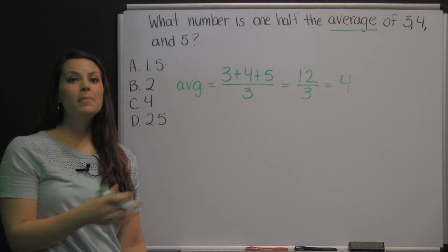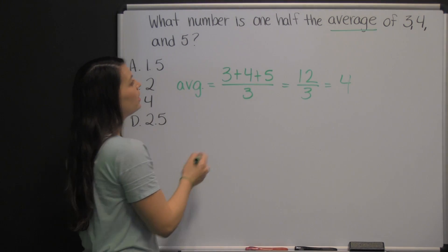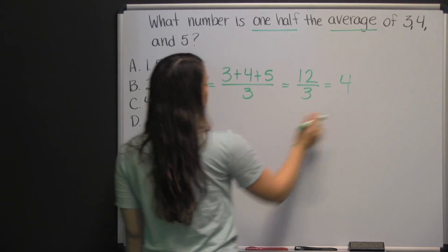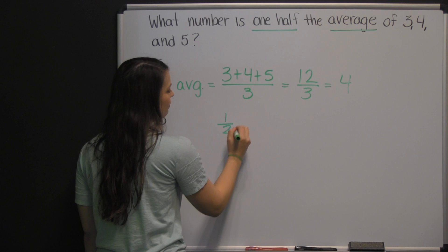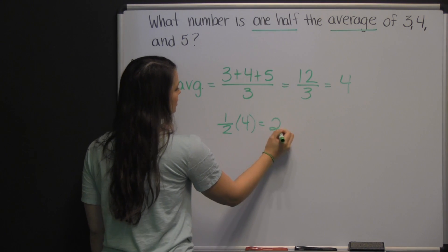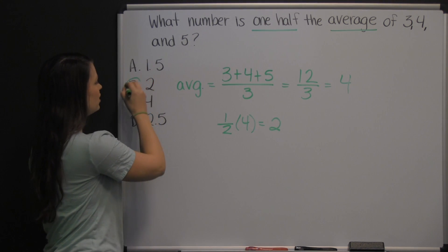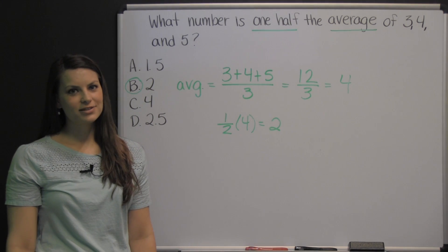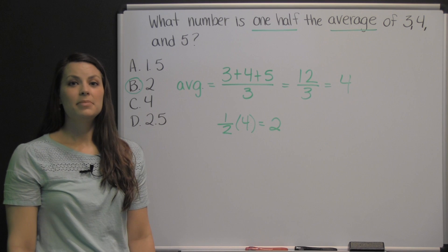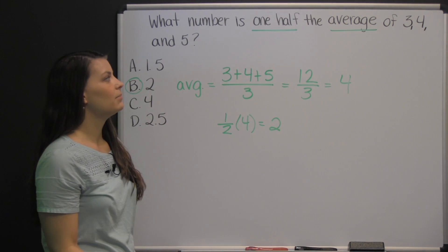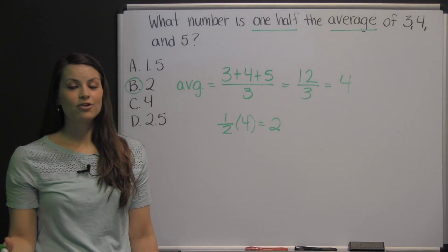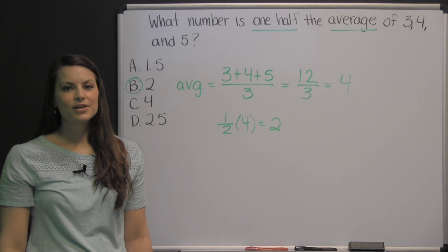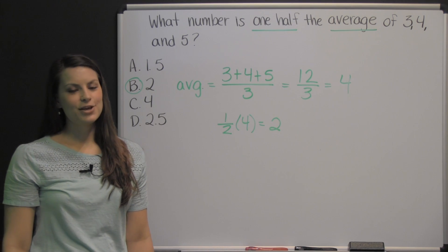But don't stop there — refer back to your question. What number is one-half the average? So this is our average, and we need to take half of that. Half of four is two. So our answer here is two. Make sure you're reading carefully when you answer these questions on the TABE test, because some of them have multiple parts to them. You may get bogged down on finding one part and then forget completely about the second part. So be careful when taking your TABE test.